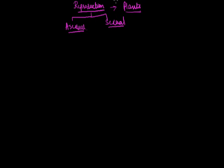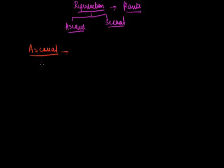In plants also these two modes of reproduction are possible: asexual and sexual. Asexual reproduction is the production of offspring by a single parent without the formation and fusion of gametes. So here gametes are not required — neither their formation nor their fusion. This reproduction occurs without gametes and can occur in many ways, ensuring rapid increase in number. Asexual reproduction occurs in most protozoans and some animals such as sponges, and is absent in higher animals.